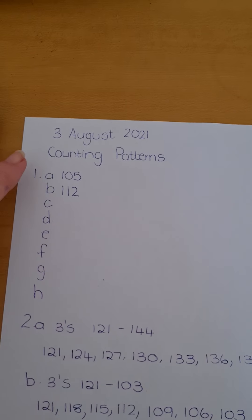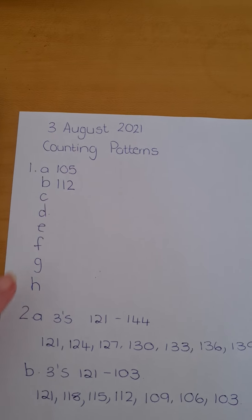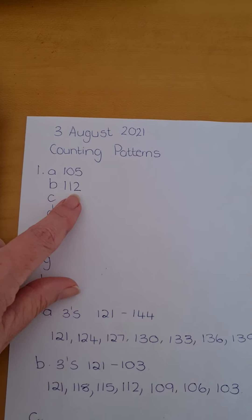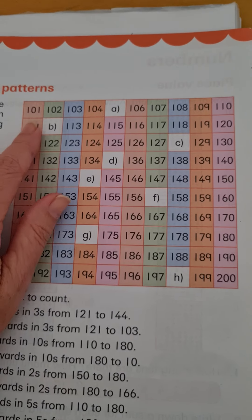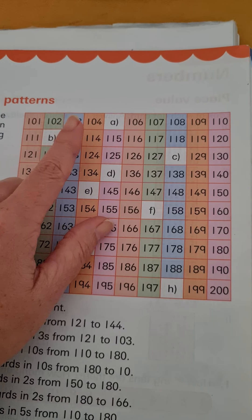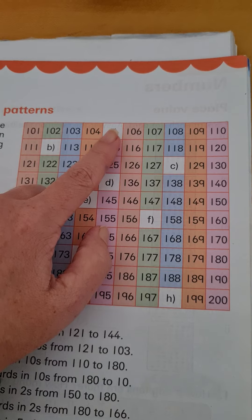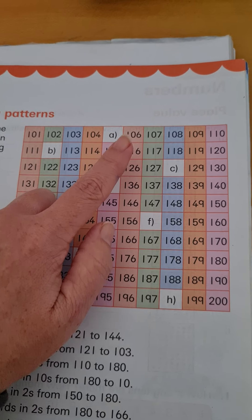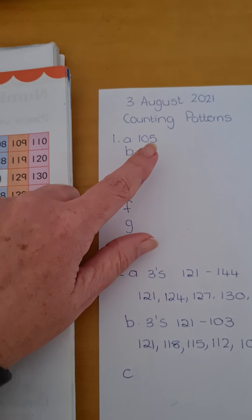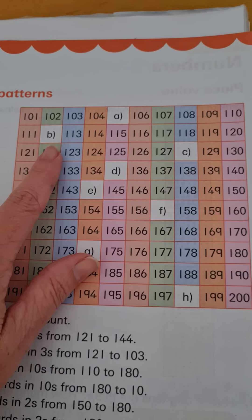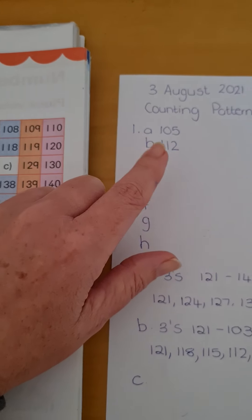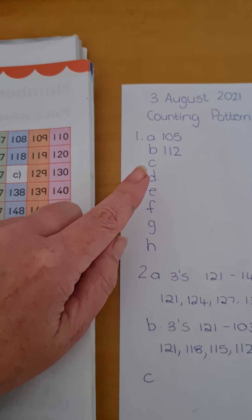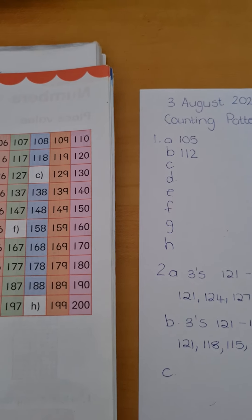So you will go ahead and number it 1 A to H, and I've gone ahead and done two examples for you. For example, the number that's missing for A is 105 because it is between 104 and 106. Then B is the number between 111 and 113, so we write 112. You will go ahead and answer the rest of them.